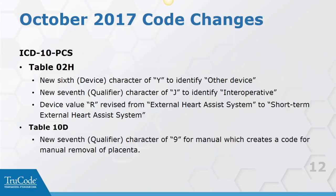I find it interesting that when PCS was first established, there was never going to be any 'other' because they felt it would be specific enough. But in the short time we've been using it, it's been identified that yes, we do need 'other' - because until something can be absolutely coded to the specificity provided, there are times when we're going to need it. The other change I was really happy to see is in table 10D: a new seventh character qualifier of 9 for 'manual,' which gives us a code for manual removal of placenta - with body parts covering retained, delayed, and other options. A really good change to the system.